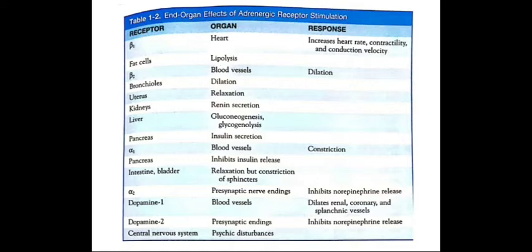The end-organ effects of alpha-1 adrenergic receptor stimulation: on blood vessels it causes constriction; in the pancreas it inhibits insulin release; in the intestine and bladder it causes relaxation but constriction of the sphincters. Alpha-2 receptor stimulation at presynaptic nerve endings inhibits norepinephrine release. Dopamine-1 receptor stimulation on blood vessels dilates renal, coronary, and splanchnic vessels. Dopamine-2 stimulation at presynaptic endings inhibits norepinephrine release, and in the central nervous system causes psychic disturbances. These are the end-organ effects of adrenergic receptor stimulation.